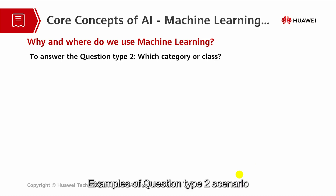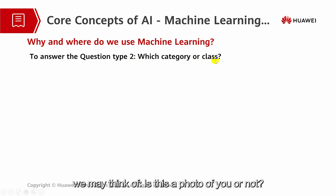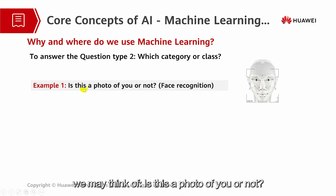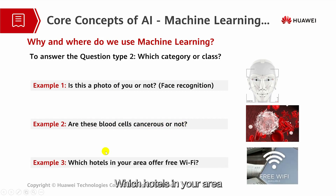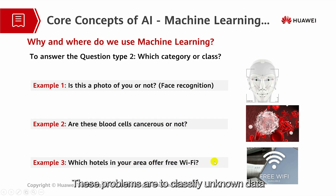For question type 2 — which category or class — we may think of: is this a photo of you or not? — in other words, face recognition. Are these blood cells cancerous or not? Which hotels in your area offer free Wi-Fi? These problems are to classify unknown data into known discrete classes.